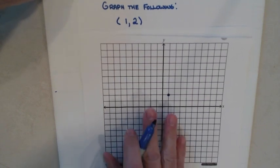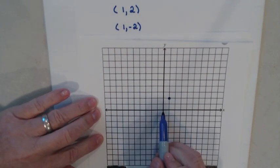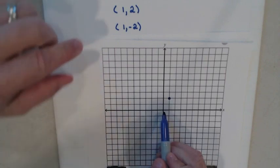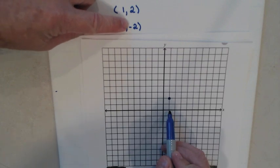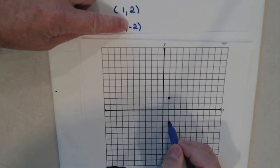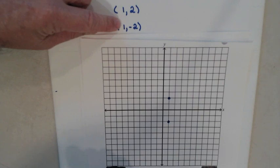Let's try the second one. I start at the origin. I look at my first number — it's positive one, so I go over one. But the second number is negative, so I need to go down that many: one, two. There is my second point. So use the first number and then the second number, then plot your point.